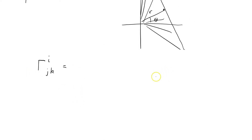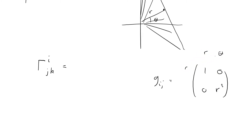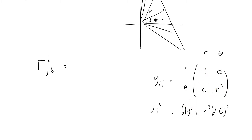Let's remind ourselves what the metric tensor is: g_ij equals the matrix with 1 and 0 off-diagonal, and r-squared as the theta-theta component. In other words, ds² = dr² + r² dθ², with 1 and r² as the components of the metric tensor.